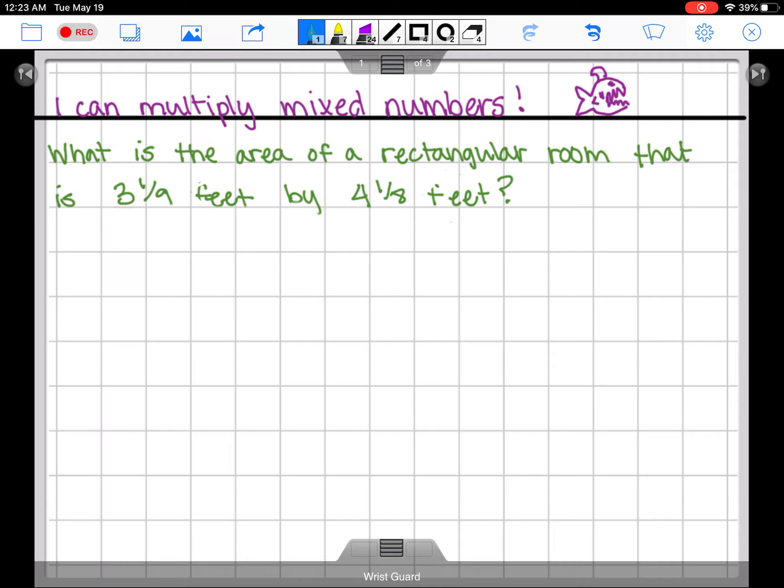I wrote it out as an area problem today just to remind us when we're finding area we're multiplying length times width. So what is the area of a rectangular room that is 3 1/9 feet by 4 1/8 feet? That means I am multiplying 3 1/9 by 4 1/8.